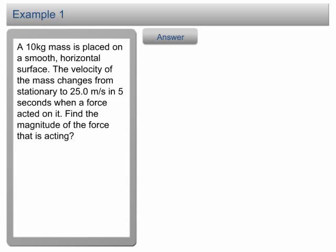Let's list down the information given. Mass is 10 kg. Initially, velocity u is 0. Final velocity v is 25 m per second. The time taken for the motion t is 5 seconds.